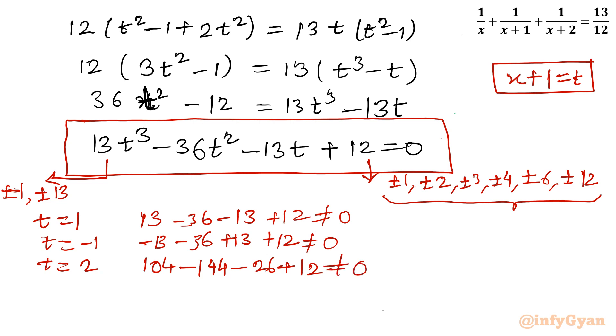If I put t equal to 3 I will write 13 times 3 cube, so 27, minus 36 times t square, so 3 square is 9, minus 13 times 3 plus 12. Let's write the values: 13 times 27 is 351, 13 times 9 is 324, 36 times 9, and 13 times 3 is 39 plus 12. 351 plus 12 is 363, and if you add 324 and 39 it is also 363. That means the base solution is confirmed, that is 3.